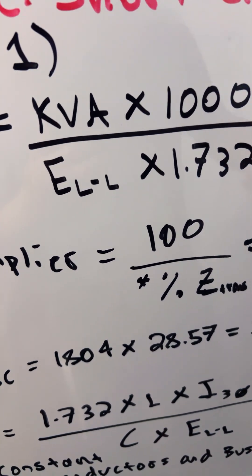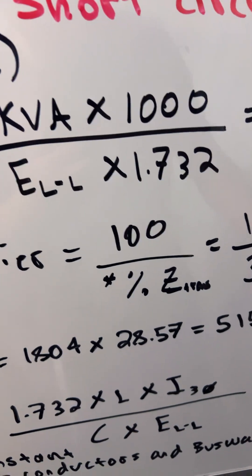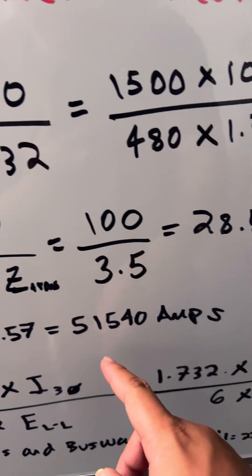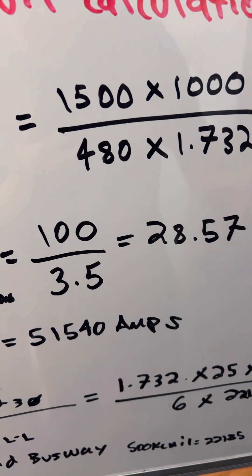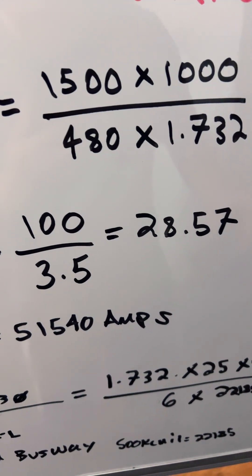This equals the line-to-line current times the multiplier, which gives us 51,540 amps.